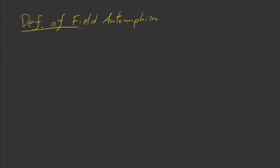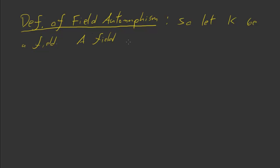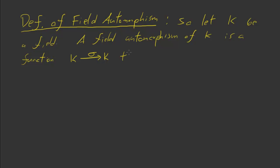For the definition of a field automorphism — if it is going to be a field automorphism, we need a field. So let K be a field. A field automorphism of K is a function sigma that satisfies the following four properties.